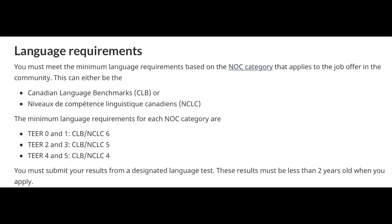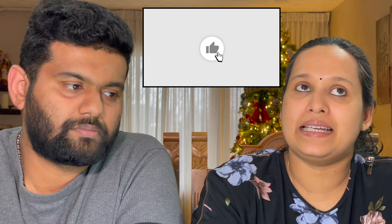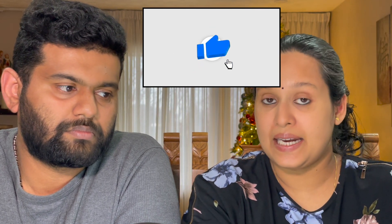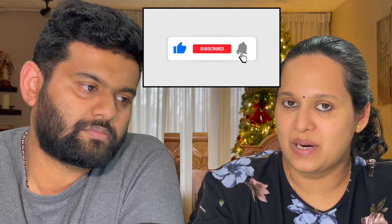There are 5 main eligibility criteria. The first is IELTS score — the CLB score. For Tier 3 and 4 jobs, CLB-4 is required. For Tier 2-3 categories, CLB-5 is needed. For Tier 0-1, CLB-6 is required. CLB stands for Canadian Language Benchmark.